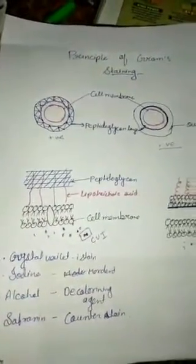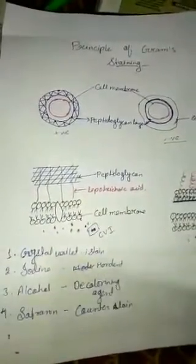or safranin cannot enter in Gram positive bacteria, so the Gram positive bacteria have violet or blue or purple color. This is the principle of Gram staining. Thank you.